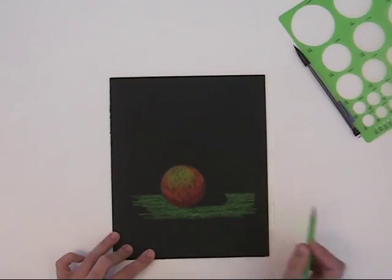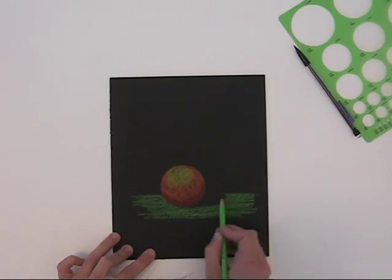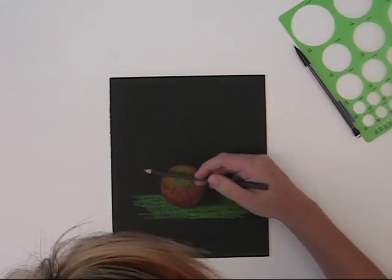We've talked about shadows before and about how they're darkest right next to the object and then they get more diffuse as they go away. So I'm going to soften the edge of that shadow a little bit, and then let's do a background behind it.